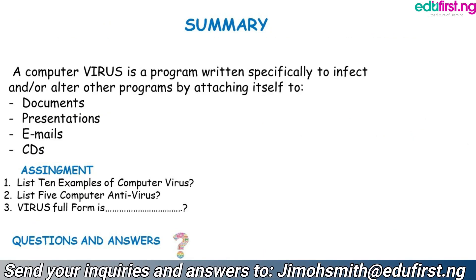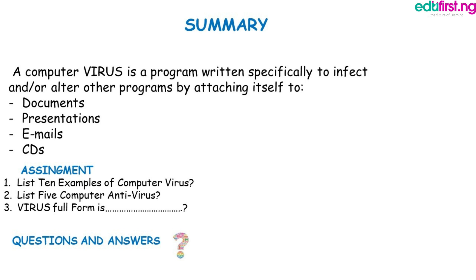Now let's do a recap: simply put, a computer virus is a program written specifically to infect and alter other programs by attaching itself to documents, presentations, emails, and CDs. Assignments: list 10 examples of computer viruses; list five computer antivirus software that you know; and write the full meaning of VIRUS — remember, VIRUS is an acronym. If you have any questions, please send us an email via the email address provided. Thank you and see you at the next class.